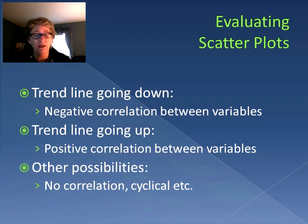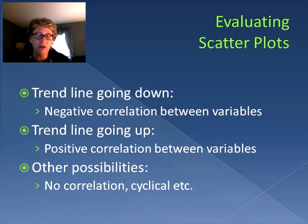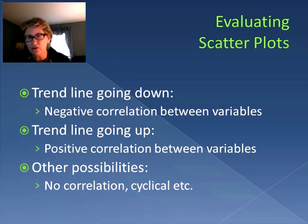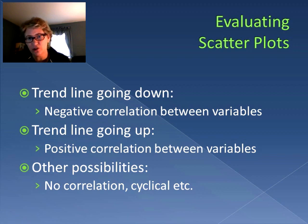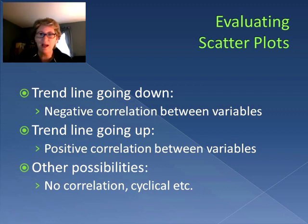Now there can be other possibilities. There can be no correlation, cyclical patterns, or all sorts of other things that can happen with scatter plots. Those are just a couple of examples, but how do we go about making a scatter plot?